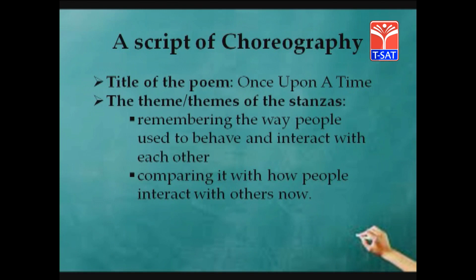When you start writing a script of choreography, you title it as 'Script of Choreography' at the top. The first point is the title of the poem — you can title it 'Once Upon a Time' or according to the theme of those three stanzas. The second step is the theme or themes of the stanzas. If the stanzas are divided into different scenes, you have to mention a scene-wise theme.